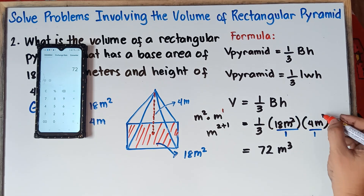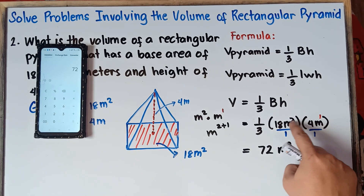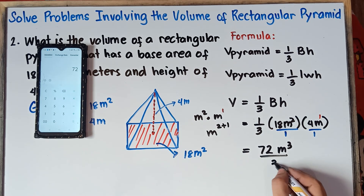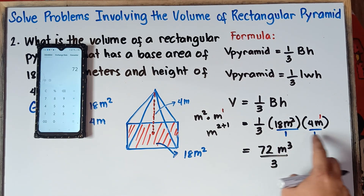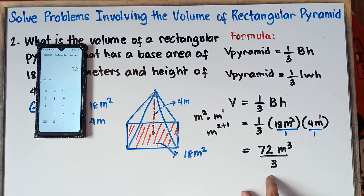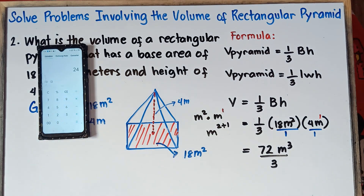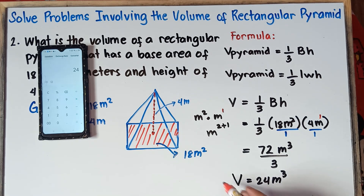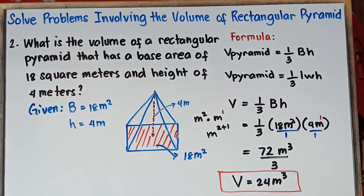Meter squared times meters equals cubic meters because, with the understood exponent of 1 on the meters, you copy the units and add the exponents: 2 plus 1 equals 3. So 72 divided by 3 equals 24. Therefore, the volume is equal to 24 cubic meters. That's the answer for Example 2.